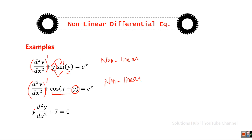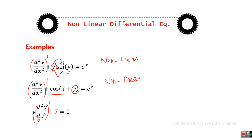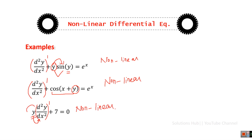The third nonlinear example has order 2 and degree 1. The problem here is that there is a product of the dependent variable and its derivative involved. Since for an equation to be linear there must be no product of the dependent variable with its derivative, this differential equation is nonlinear.